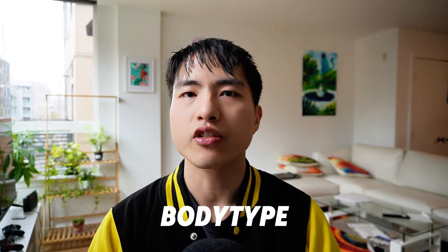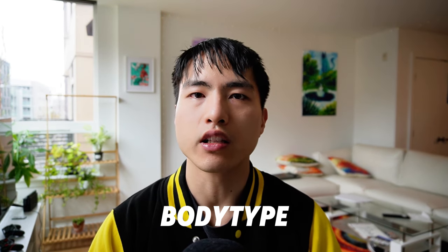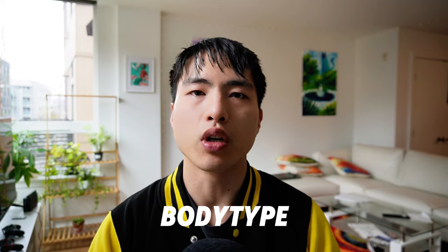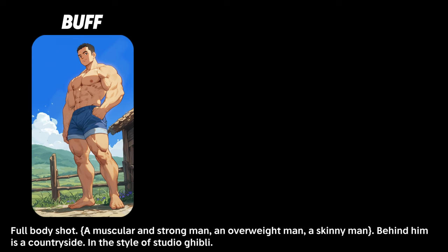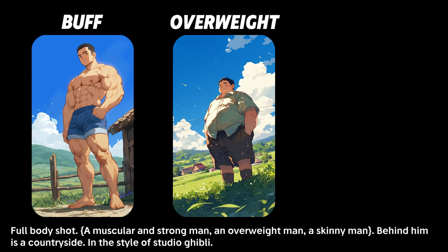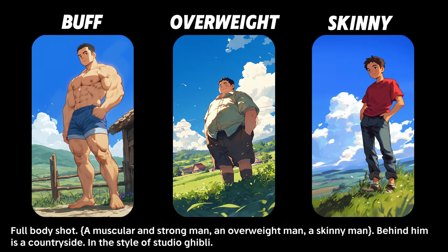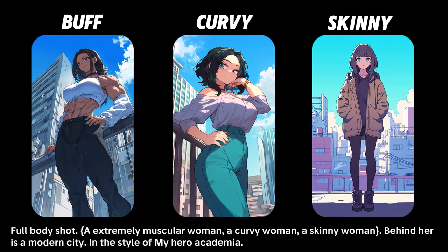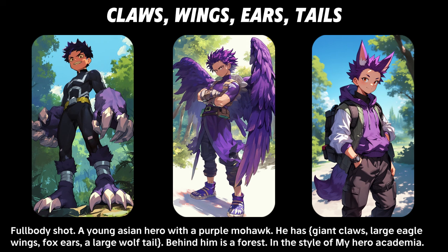The body type of your character defines their silhouette. It might give some insight into their personality and helps them become instantly recognizable even from a far distance. For men, you've got the super buff gym rat, the overweight guy with a potbelly, or a regular size boy who's a bit on the skinny side. Common body types for women include the buff muscular superhero girl, the more curvy ladies, and the average typical high school student. If you want to get more creative, try combining human bodies with animal body parts like claws, tails, ears, or wings — these combinations may show specific powers or a more interesting origin story.